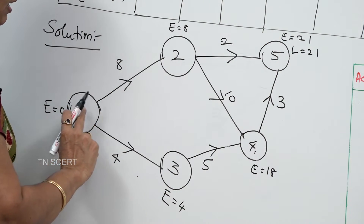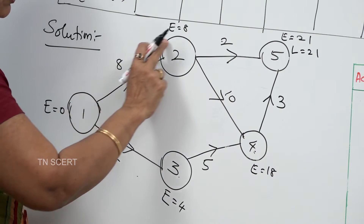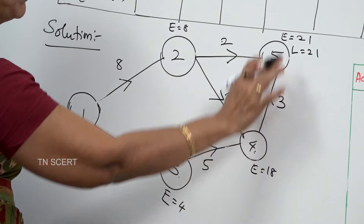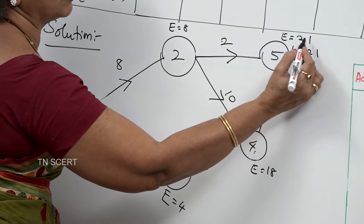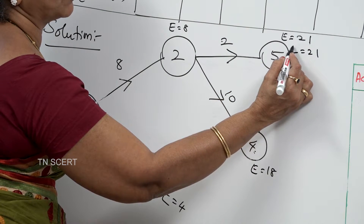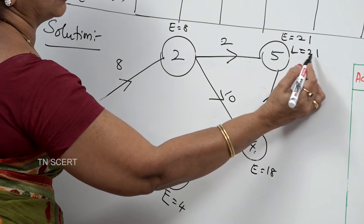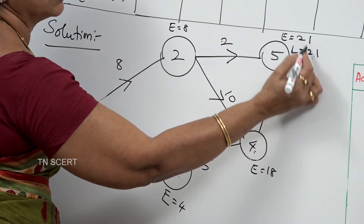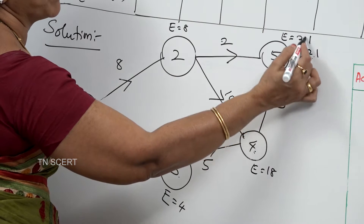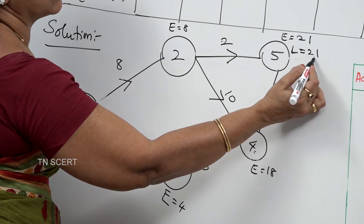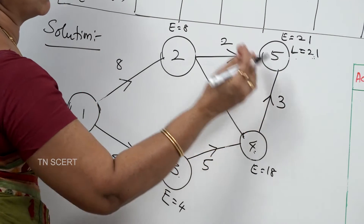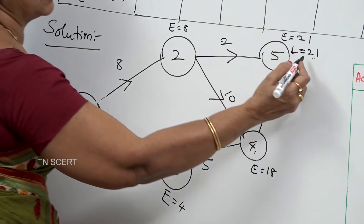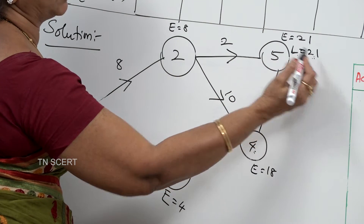If you have the maximum number for 1→4→5, this is the maximum number. Next, we start at node 5. Let's say here L equals 21. This is the last number — the project duration is 21 days. L is equal to 21. Let's work backward from the last activity.